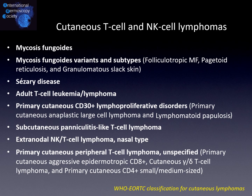Let's start with cutaneous T cell and NK cell lymphomas. As you can see, in this category we have many variants, but from a dermoscopic point of view we have two subtypes which have been described in more detail: mycosis fungoides in its patch stage, and lymphomatoid papulosis.